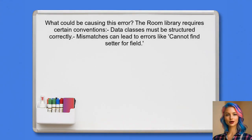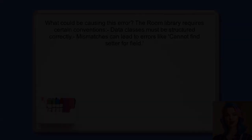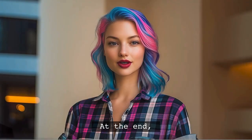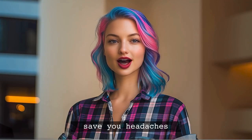So, what could be causing this error? The Room library requires certain conventions to be followed, especially regarding how data classes are structured. If the Room library can't find a setter for a field, it usually means there's a mismatch in expectations. Stick around — at the end of this video, I'll share a quick tip that can save you a lot of headaches when working with Room and Kotlin.